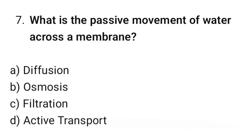Question number 7: What is the passive movement of water across a membrane? The correct option is B. Osmosis.